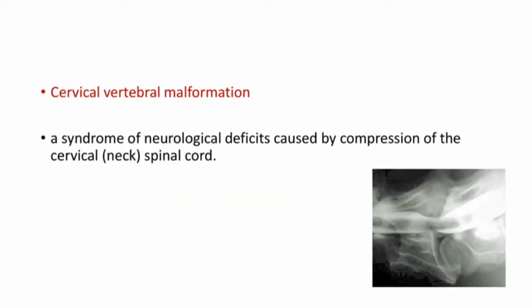The first condition is Wobbler syndrome, also known as cervical vertebral malformation because it is the cause of this disease. It is a syndrome of neurological deficits caused by compression of the cervical spinal cord. This is an x-ray of the cervical spinal cord, and in this picture you can see clearly the compression of the spinal cord in the cervical region.